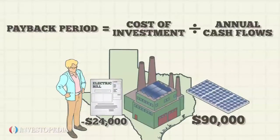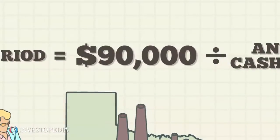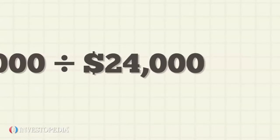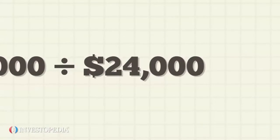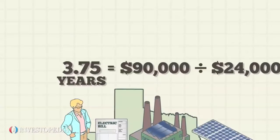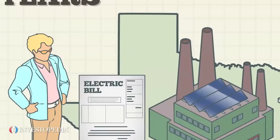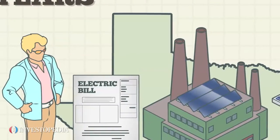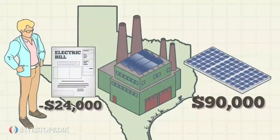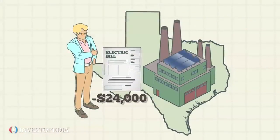Dividing the total cost of the solar panels, $90,000, by the annual cash flow, $24,000, the payback period is 3.75 years. So in three years and nine months, Sonny will not only reduce his carbon footprint, but also start seeing the benefits of his investment on his electric bill.